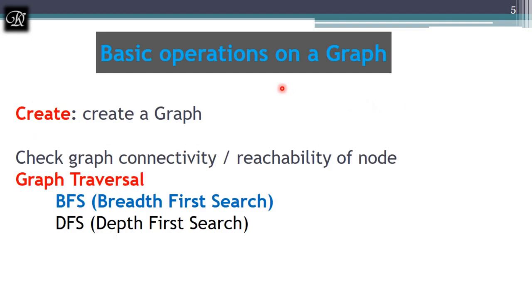What are the operations we can perform on the graph? First, we have to create the graph, for which we have two techniques. Once we have a graph, we can traverse it to check for connectivity or reachability of a node from the given source node. For that, we have two well-known algorithms: breadth-first search and depth-first search. BFS makes use of a queue, and DFS makes use of a stack — BFS is an application of queue, DFS is an application of stack.